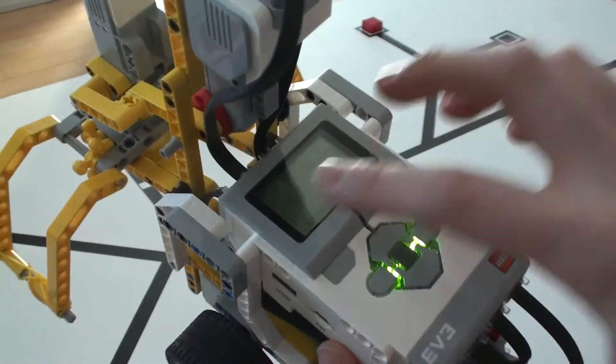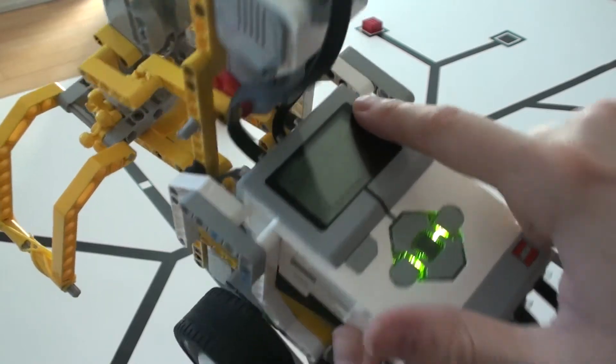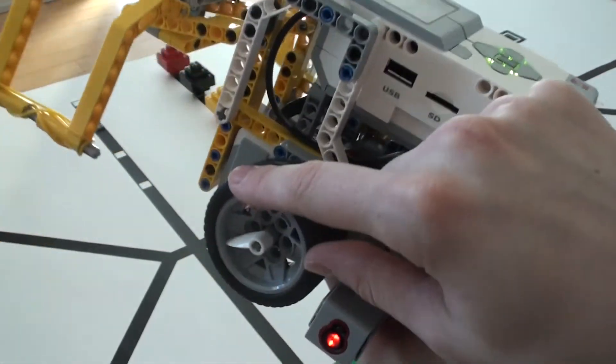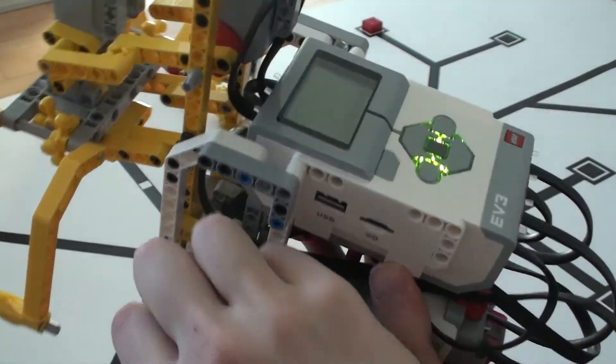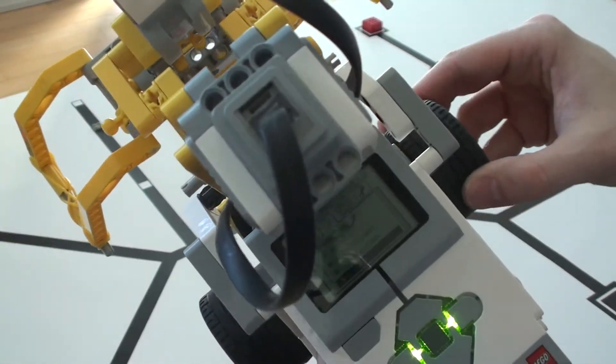which leaves the ports for A and D and they obviously go to the main motors. So we got A on the left and D on the right.